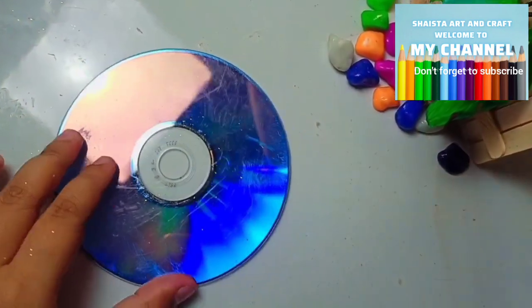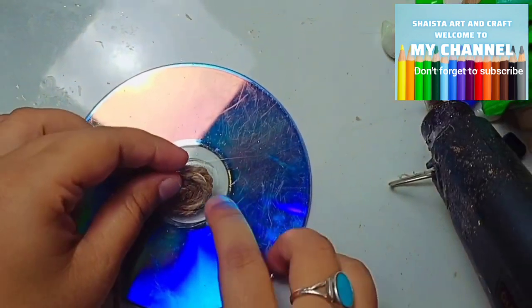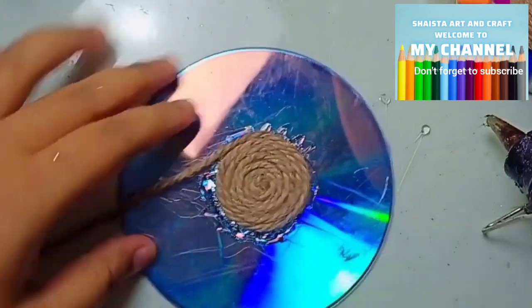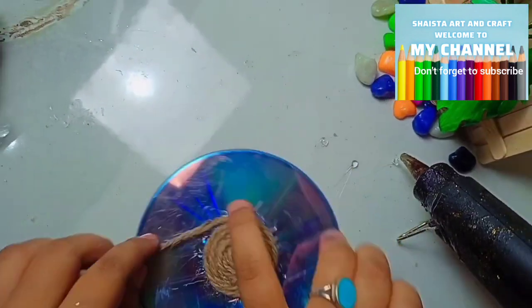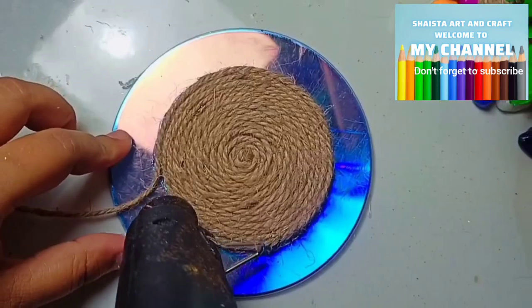The next craft is craft number 2. I brought a CD, it was a very old CD. I thought why not try it to be different. I have used the jute rope on it.